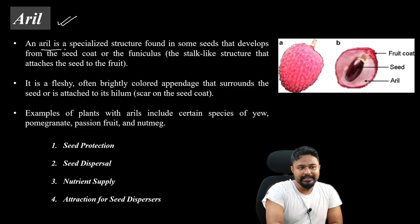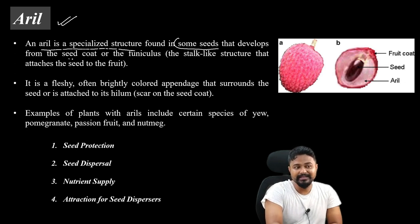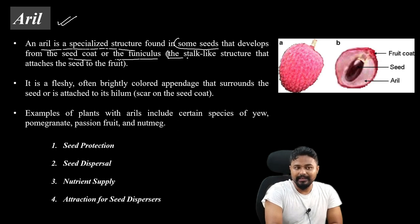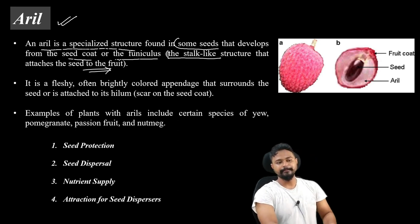An aril is a specialized structure found in some seeds that develops from the seed coat or the funiculus. The funiculus is the stalk-like structure that attaches the seed to the fruit.